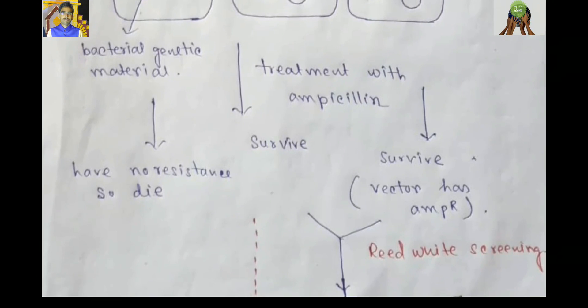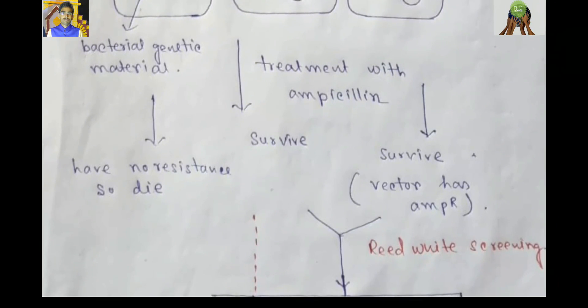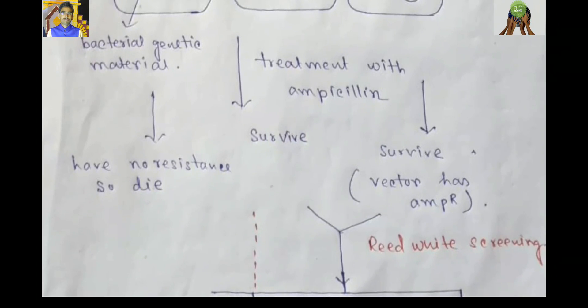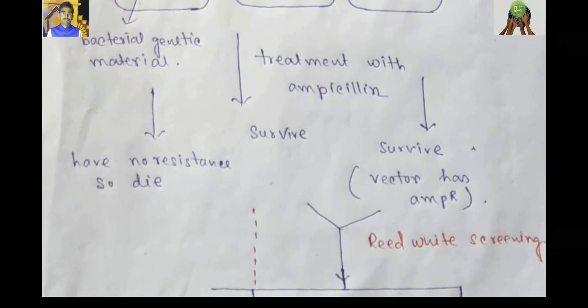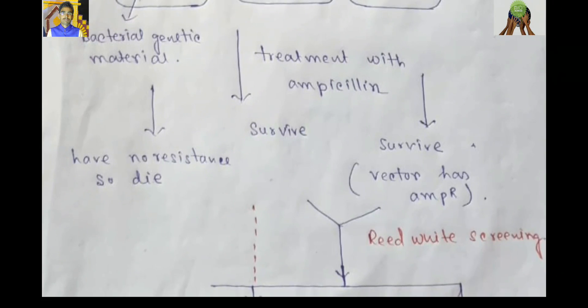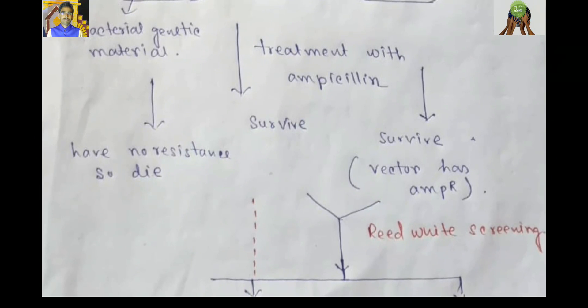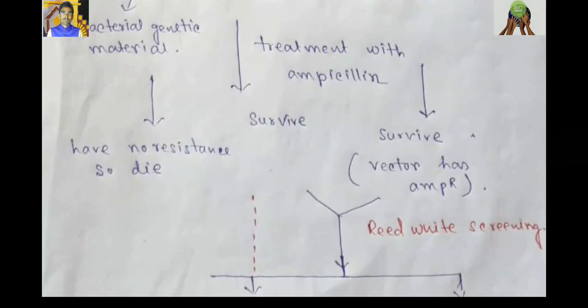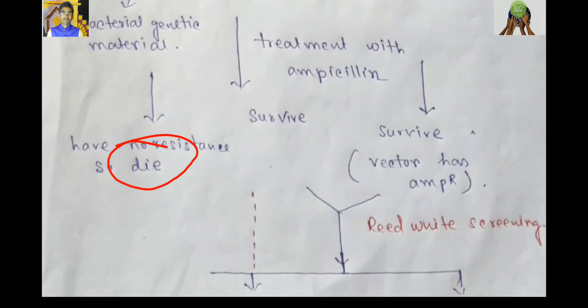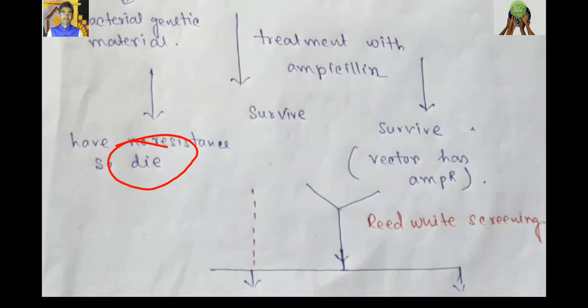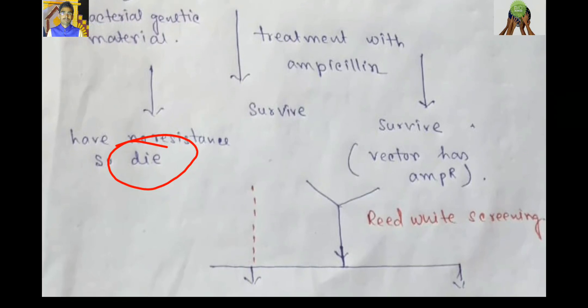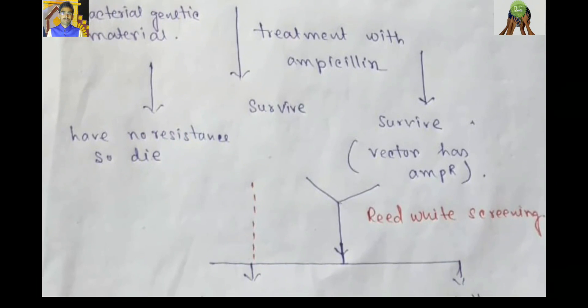Then, at first, selectable marker ampicillin is applied. When we apply ampicillin, which don't have any resistance to ampicillin, they have to die. So, first one die. But two other ones present. They survive.